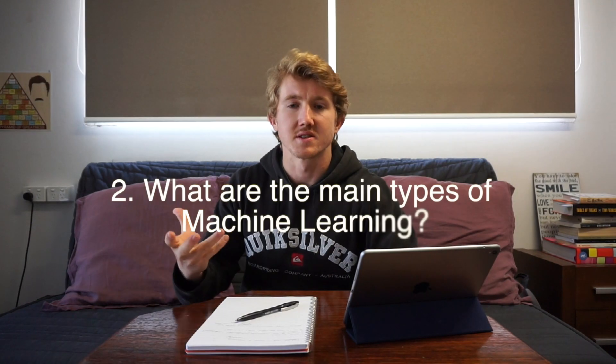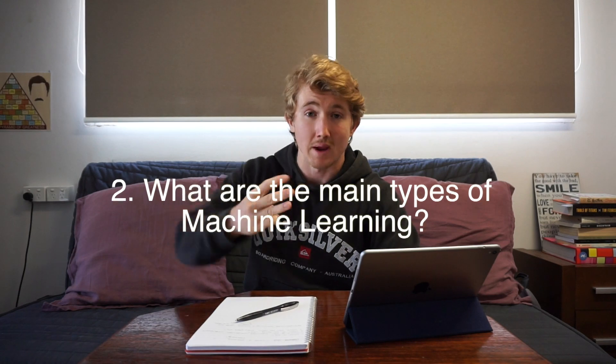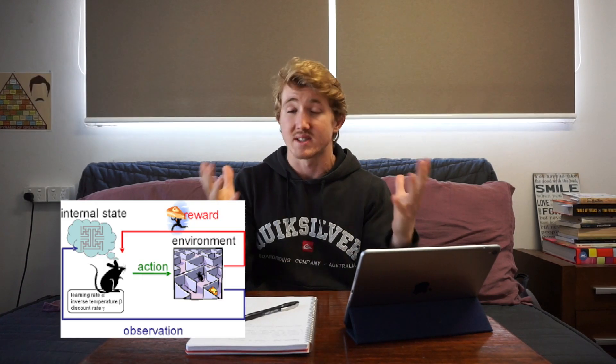Number two, what types of machine learning are there? I'm going to go over three main types, but just be aware there are plenty more: supervised learning, unsupervised learning, and reinforcement learning. For supervised learning, say you had a whole bunch of data on house selling prices — the number of rooms, square feet, and suburb the houses were in, and their selling price. You can train a machine to take in all that data and then predict the future selling prices of houses if you know their number of rooms, square feet, and suburb.